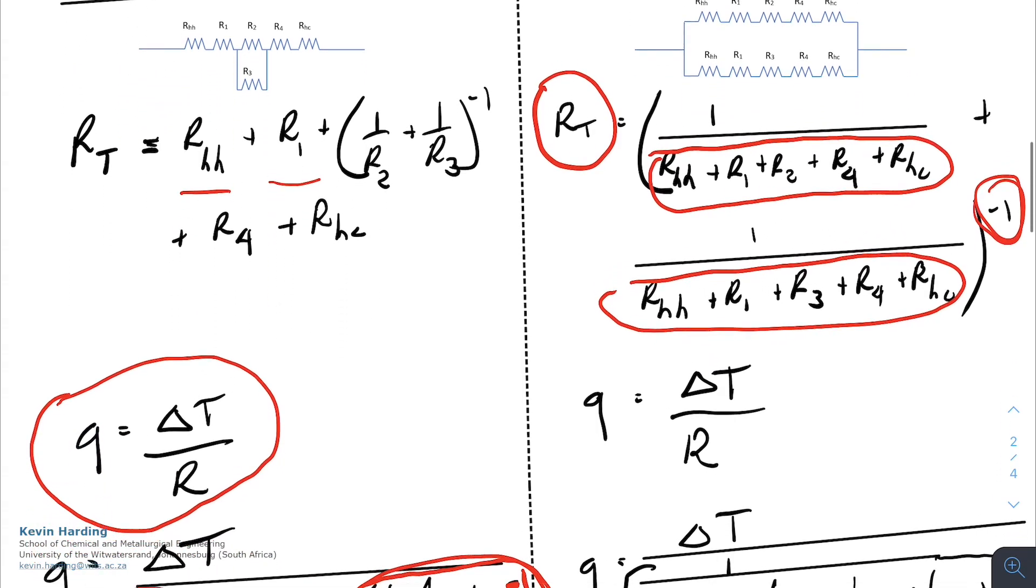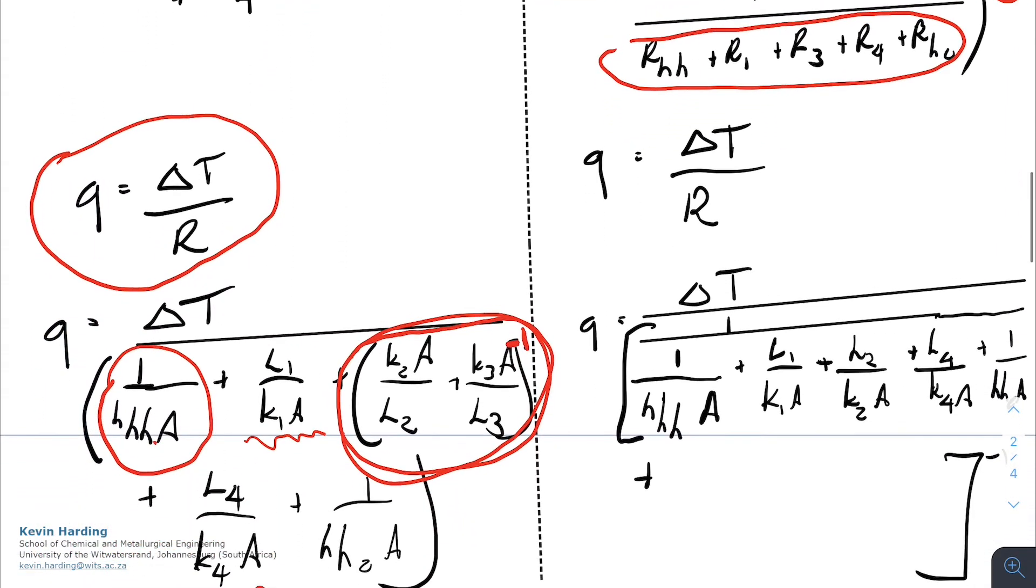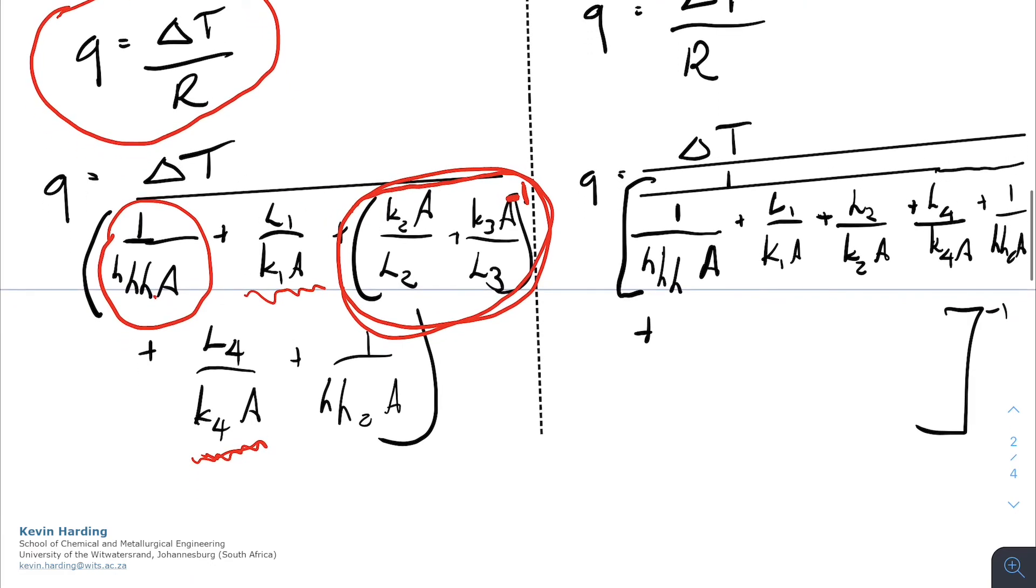When we start putting this into a Q equation, Q is equal to delta T on R, it gets rather messy. So there we have our delta T divided by, and now we have one divided by all of these individual terms here. So there's one divided by HA, the convective heat transfer on the hot.